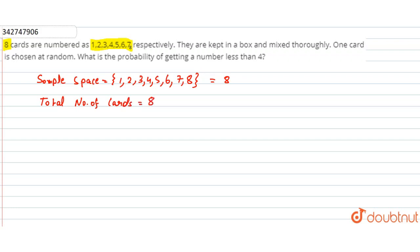Now, we need to find the probability of getting a number less than 4.